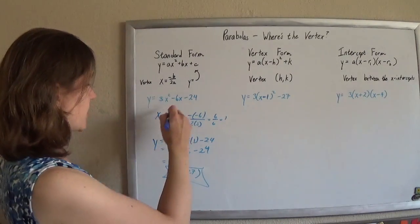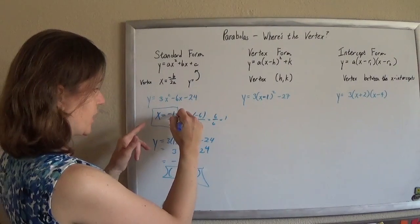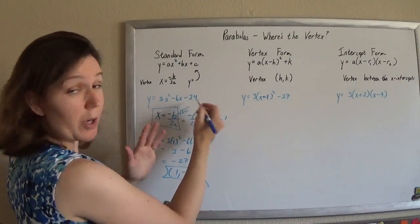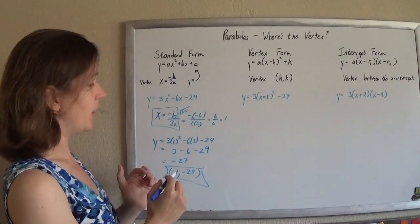I have the vertex as 1 comma negative 27. Easy, right? We like this formula. It's not too bad to memorize. It's the quadratic equation without the square rooty part. If you already know your quadratic formula, you've already got the negative b over 2a from that.